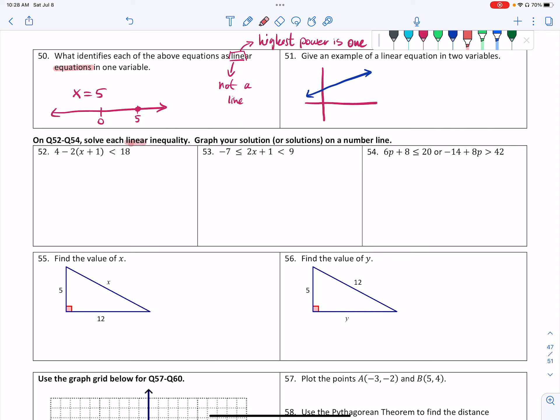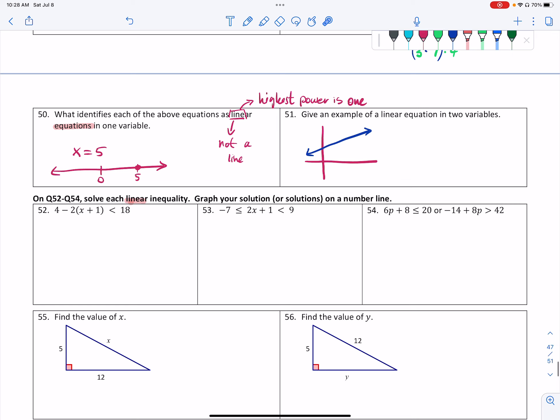So as you probably recall, the word linear often implies a couple of different things. One of them is the graph of that thing is a line, but not in this case. It's the other implication with linear, which is that the highest power of each one of these variables is one.